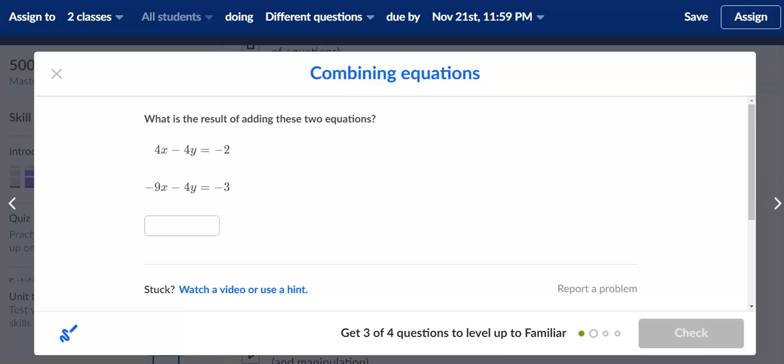Alright, Khan Academy Algebra. We're looking at systems of equations, and this section is called combining equations. Basically what this is setting us up for is to use elimination, which is a method to solve a system. And in combining equations, we're either going to add or subtract.